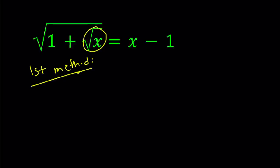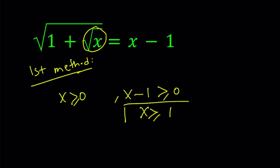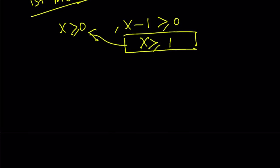Notice that we have a square root of x, so x must be positive. And we have a radical equals x minus 1, so x minus 1 must be greater than or equal to 0. We also have that x minus 1 should be greater or equal to 0, which implies x is greater or equal to 1. But if x is greater than or equal to 1, it automatically implies x is greater or equal to 0. So I just need x to be greater than or equal to 1. Let's remember that as we solve this problem.